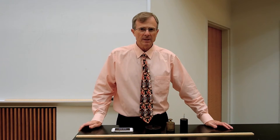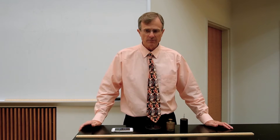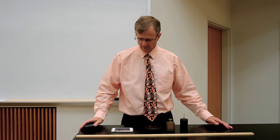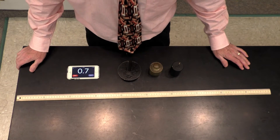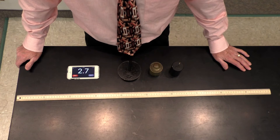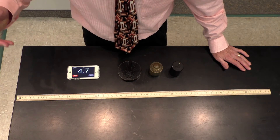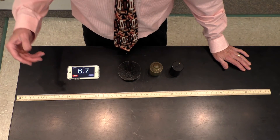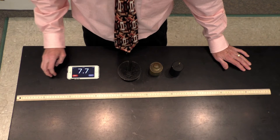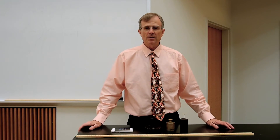The SI unit for time is the second, and it's the one that you're familiar with from your watch — 1,000, 2,000, 3,000, 4,000 — and that's the unit of time.